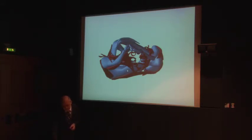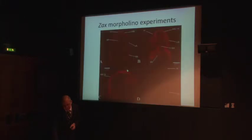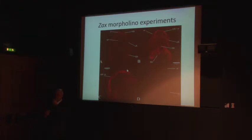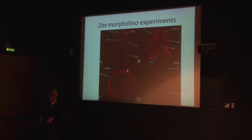We found a transcription factor — FOXN3 — that seems to stop normal cartilage formation. It doesn't stop the cells that form cartilage from migrating, but in the later stages it kind of doesn't work anymore. I'll return to the question: what is the novelty — is it the infrarostral, the extra lower jaw element? Or is it that new joints were made? We looked at so-called bagpipe genes, named after the Drosophila mutant.